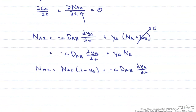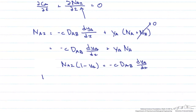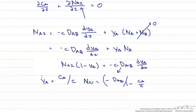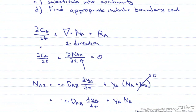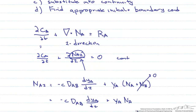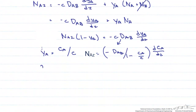We need this in terms of concentration of A, so using the definition of mole fraction y_A = C_A/C, we can write the flux as minus D_AB divided by (1 - C_A/C), multiplied by (dC_A/dz). Substituting back into the continuity equation gives: dC_A/dt + d/dz of that flux expression equals 0.